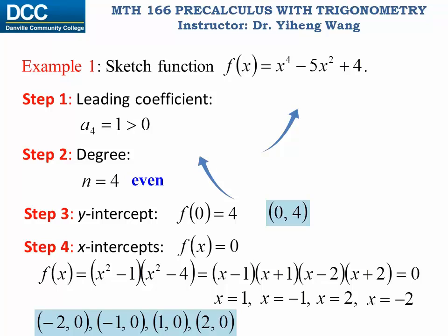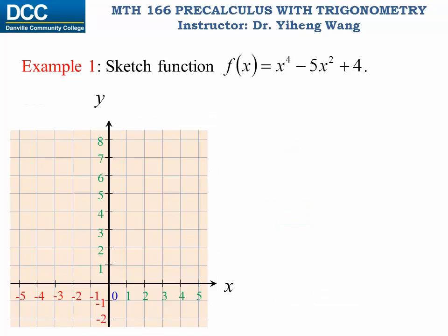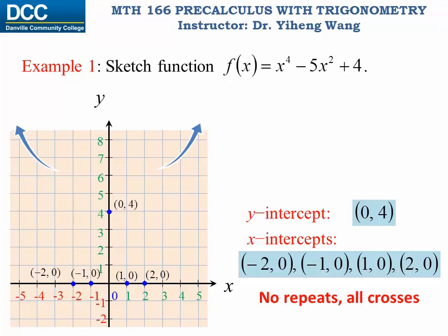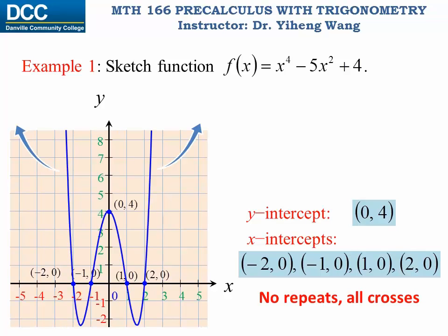None of the zeros are repeated. Now we are ready to sketch the graph: right tail goes up, left tail goes up, y-intercept at (0, 4), and x-intercepts at x = -2, -1, 1, 2. Since each zero appears only once — an odd multiplicity — the graph crosses the x-axis at each intercept. Based on all this information, here is the graph.